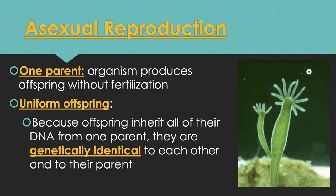Now we move on to asexual reproduction. The prefix 'a' means 'not,' so it means not sexual reproduction. Asexual reproduction is when one parent produces offspring by itself without any fertilization. This results in uniform offspring — all the same — because the offspring inherit all of their DNA from one parent, making them genetically identical to each other and to their parent.